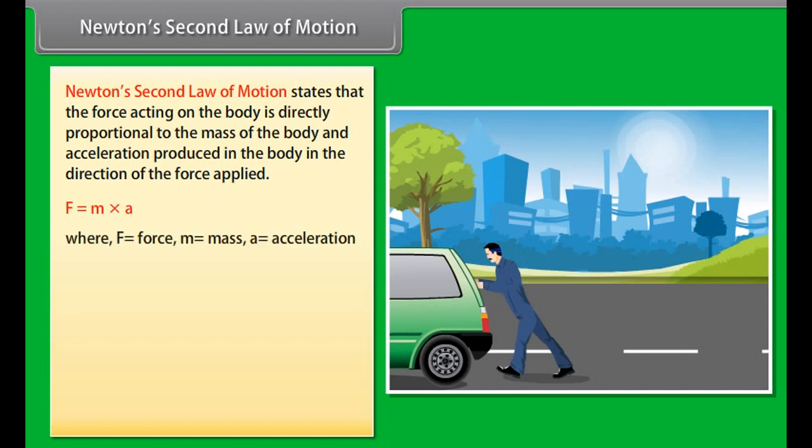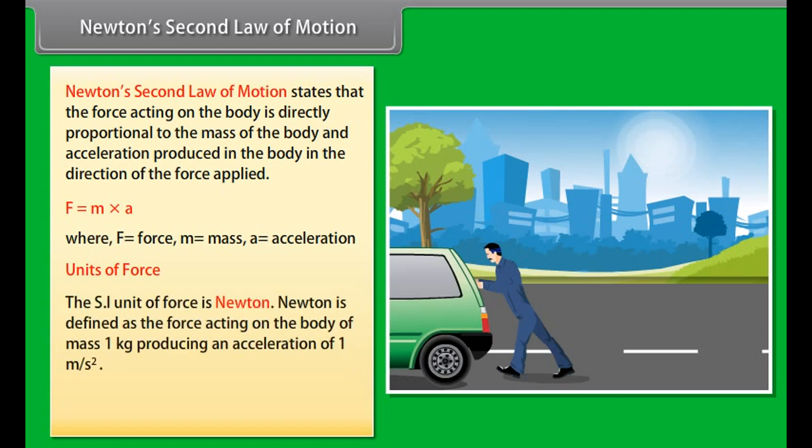Newton's second law of motion. Newton's second law of motion states that the force acting on the body is directly proportional to the mass of the body and acceleration produced in the body in the direction of the force applied. F equals M into A. Where F equals force, M equals mass, A equals acceleration.